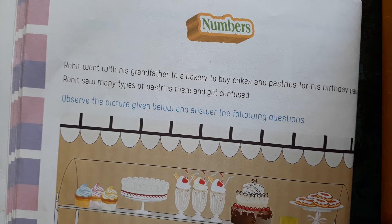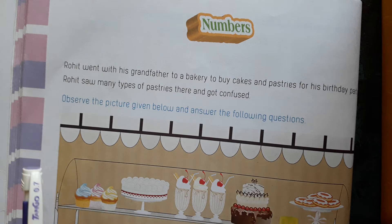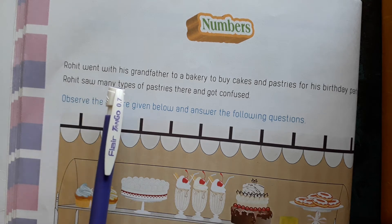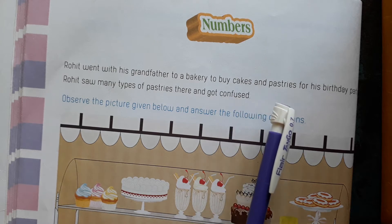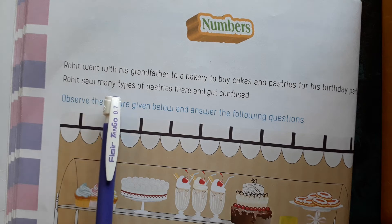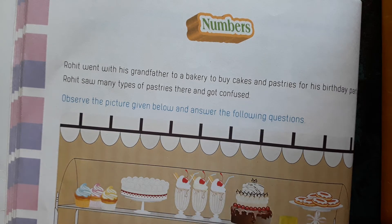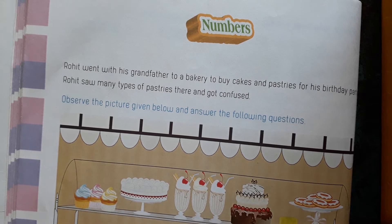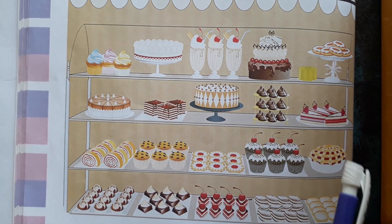Our second chapter is Numbers. Look at this page children. When Rohit went with his grandfather to a bakery to buy cakes and pastries for his birthday party, Rohit saw many types of pastries there and got confused. Observe the picture given below and answer the following questions. Observe this picture carefully children.